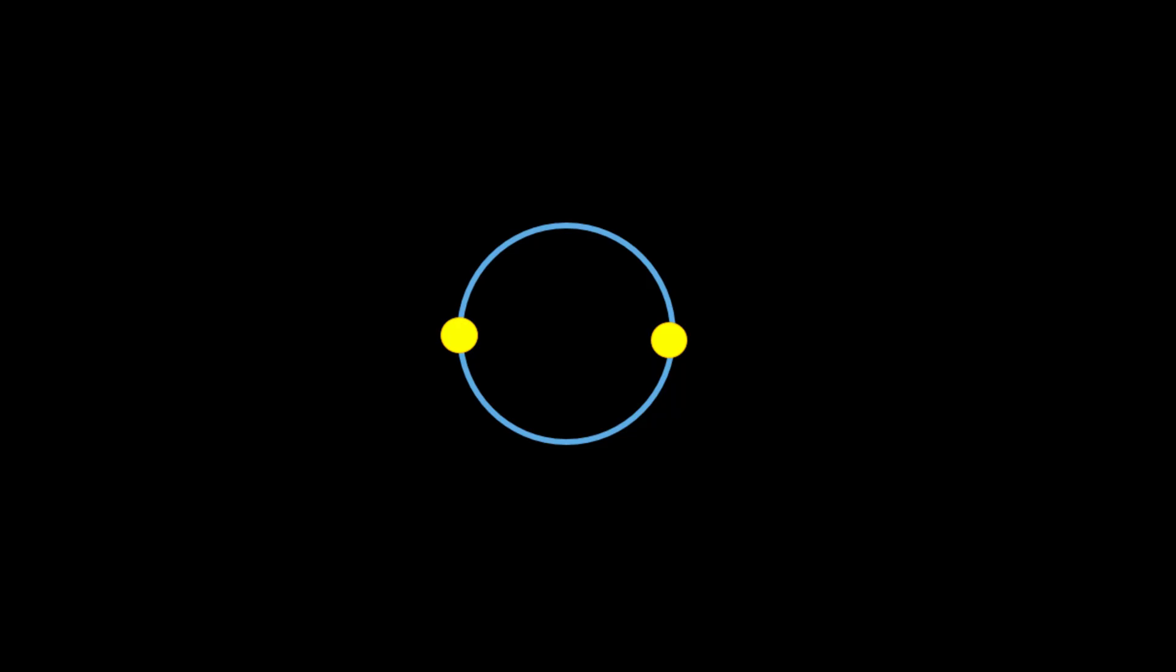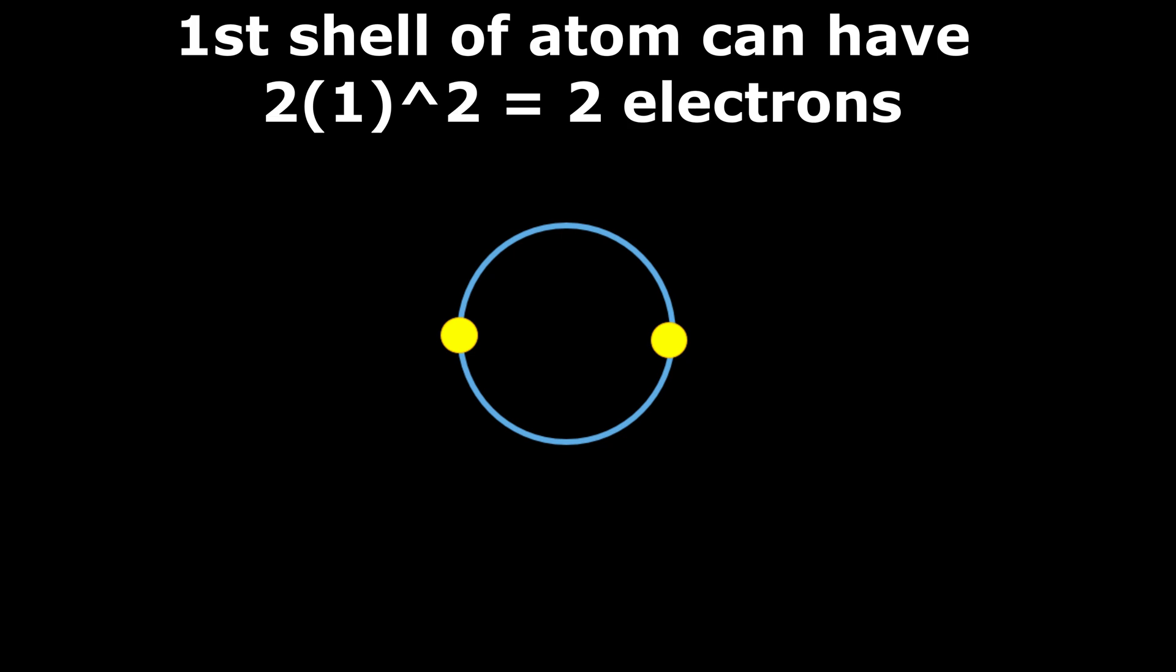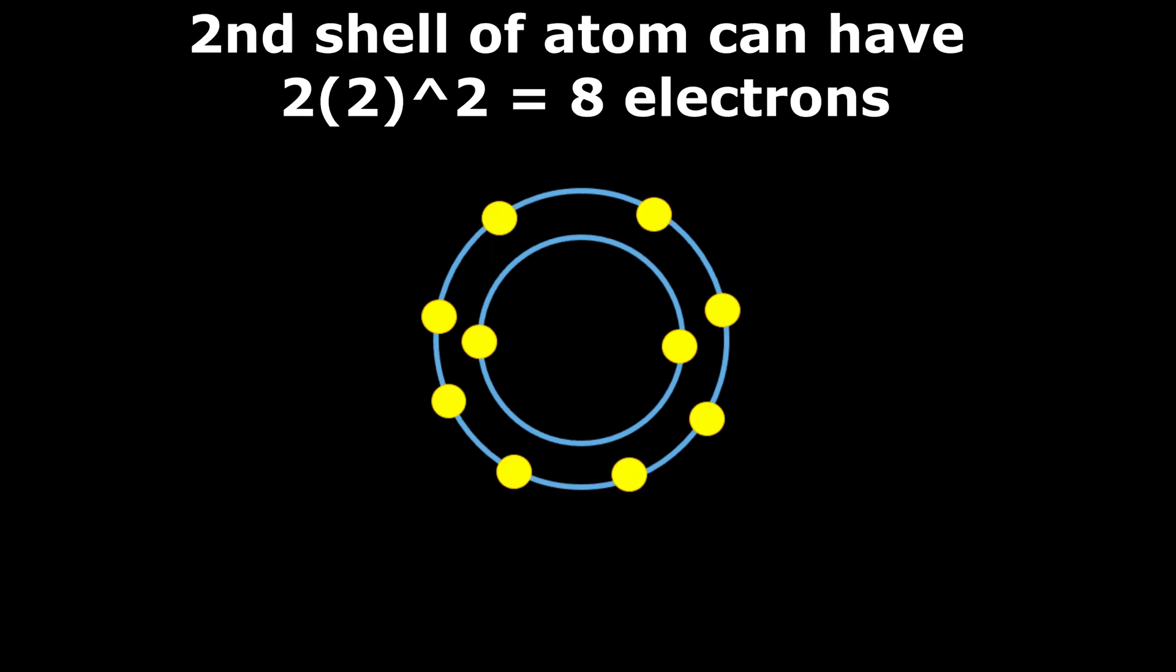So, as per this formula, the innermost shell of the atom, which is the first shell, can accommodate a maximum of 2 times 1 squared, that is 2 electrons. In the same way, the second shell of the atom can allow a maximum of 2 multiplied by 2 squared, that is 8 electrons, and so on.